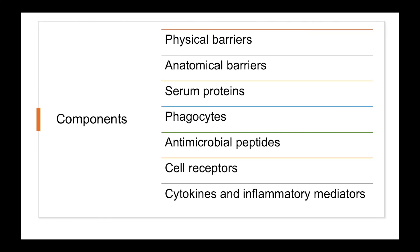So, what are the different components of the innate immune system? The different components are as follows: physical barriers, anatomical barriers, serum proteins, phagocytes, antimicrobial peptides, cell receptors, and cytokines and inflammatory mediators.